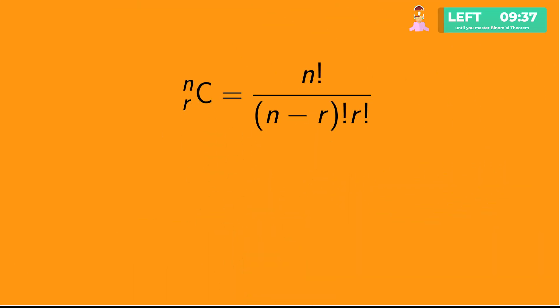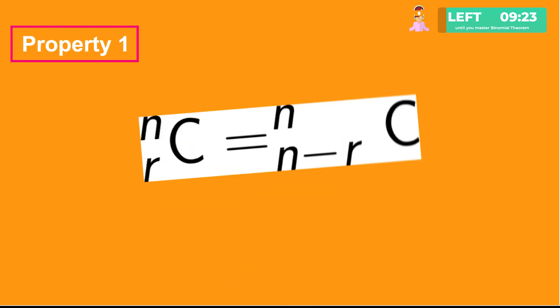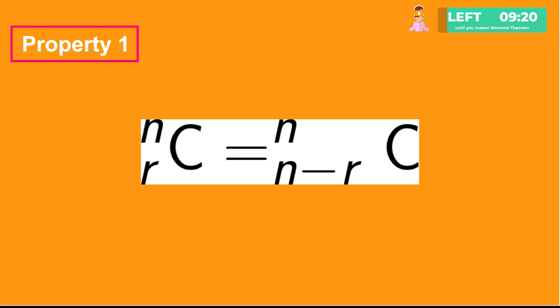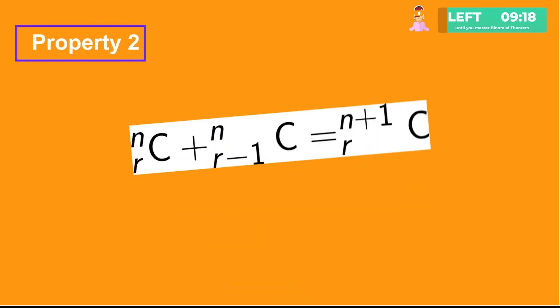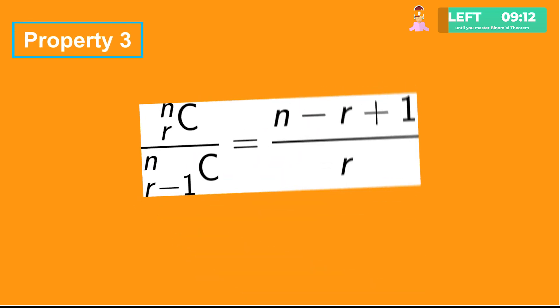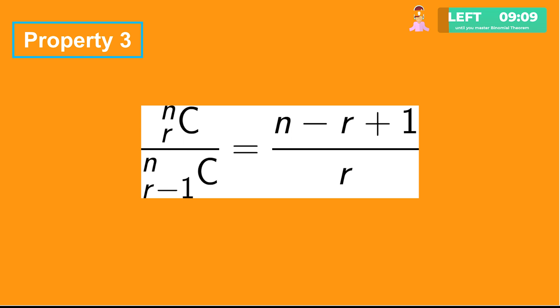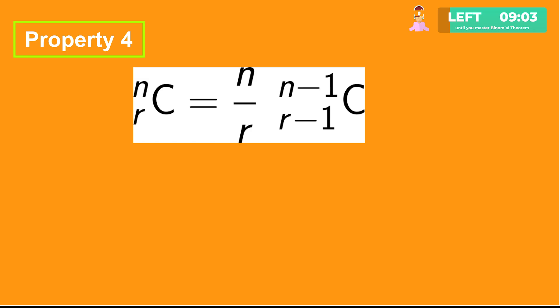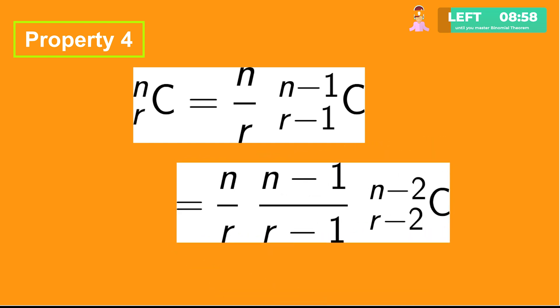nCr equals n factorial upon (n minus r) factorial into r factorial. It is also denoted as C(n, r). Properties of combinations: first, nCr equals nC(n minus r). Second, nCr plus nC(r minus 1) equals (n+1)Cr. Third, nCr upon nC(r minus 1) equals (n minus r plus 1) upon r. Fourth, nCr can be written as n by r into (n minus 1)C(r minus 1).